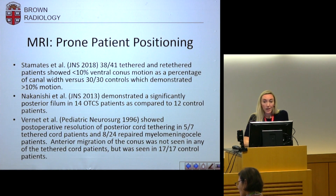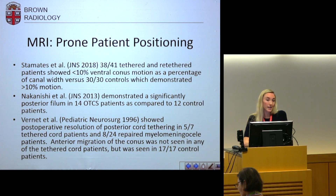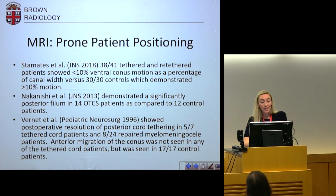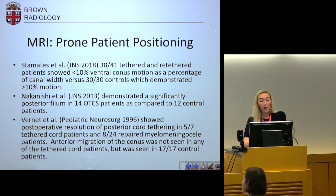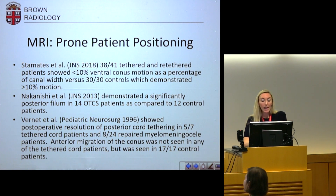I also wanted to touch on studies done with other imaging modalities using MRI, such as prone patient positioning. There have been multiple studies done, but ultimately we have not adopted this at our institution — the literature is mixed. It's not specific enough. The 1996 study did not show statistical significance between the control population and the tethered cord patient population. Although some positive findings are seen, it's just not good enough at this point. It's uncomfortable for the patient, and there are other downsides of prone imaging.